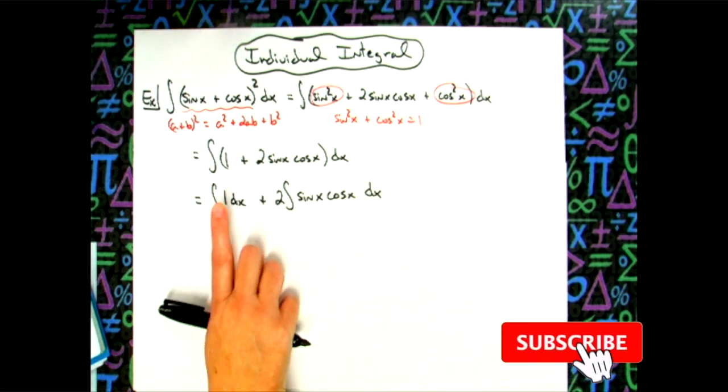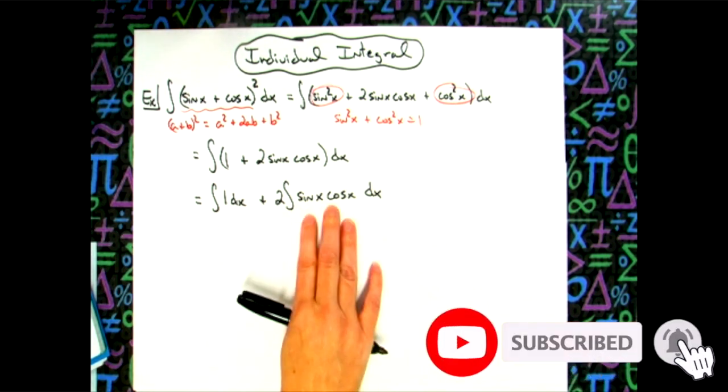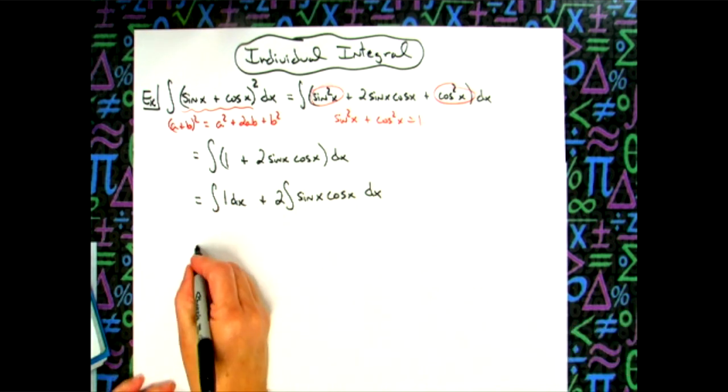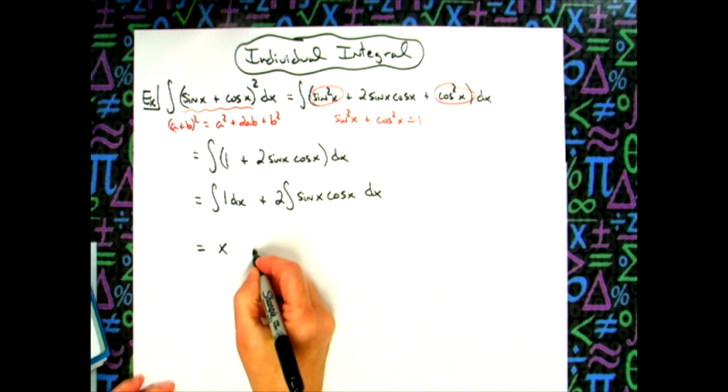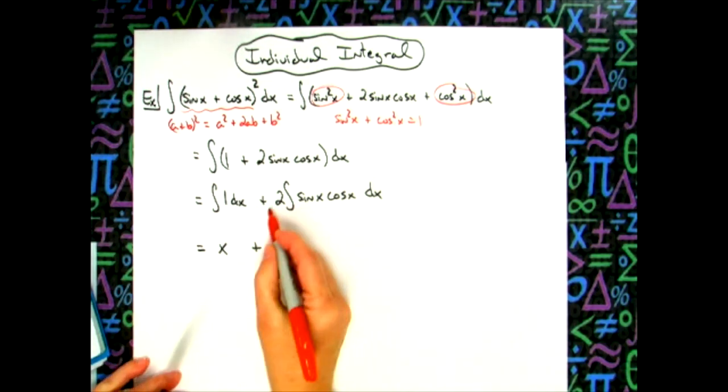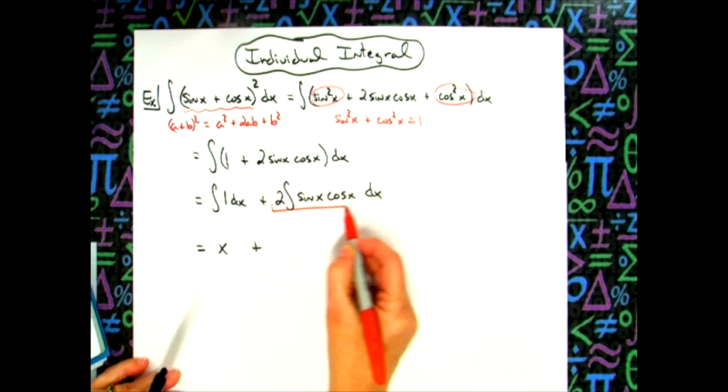So two separate integrals like that. Now this one's going to integrate really easy. It's just going to be an x. Over here, we're going to need a u substitution. So let's go ahead and integrate this down to an x. And then remember that this will carry all the way down.